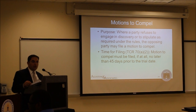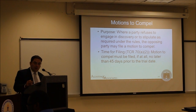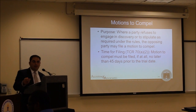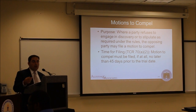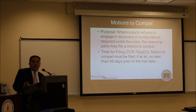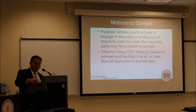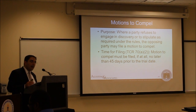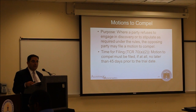Once you get into formal discovery, if a party refuses to engage in discovery or to stipulate as required, the opposing party may file a motion to compel — asking the court to compel the party to act, and if they don't, imposing sanctions. Sanctions can be monetary, or prejudicial — such as the party not being allowed to introduce the type of evidence sought through the discovery proceeding. Motions to compel must be filed no later than 45 days before trial. For purposes of your exam, you need to know that motions to compel must be filed 45 days before trial.